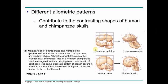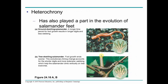You also see this in skulls, where different parts grow at different rates. Chimpanzee skulls have a protrusion of the jaw, whereas a human adult does not, but you'll notice that in the fetus they look very similar. Here you see heterochrony in salamander evolution, where the ground-dwelling salamander has longer feet and little webbing — a longer growth period for their digits — versus the tree-dwelling salamander with shorter fingers and webbing.